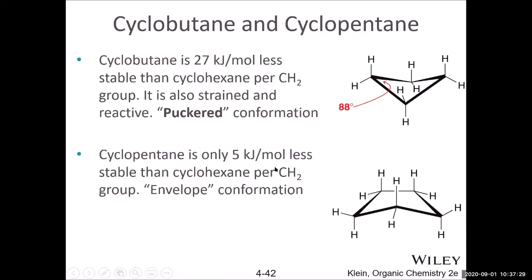Cyclopentane is fairly stable — very good compared to cyclopropane and cyclobutane. Compared with cyclohexane, it is only about 5 kJ/mol higher per CH2 unit. The most stable conformation for cyclopentane is the envelope conformation. If you build a model, you'll notice it's somewhat hard to make — one bond has a lot of stress — and the model stress is very similar to what the real molecule experiences.